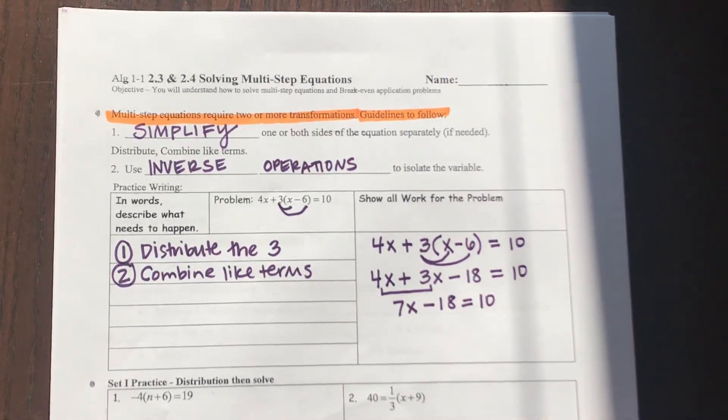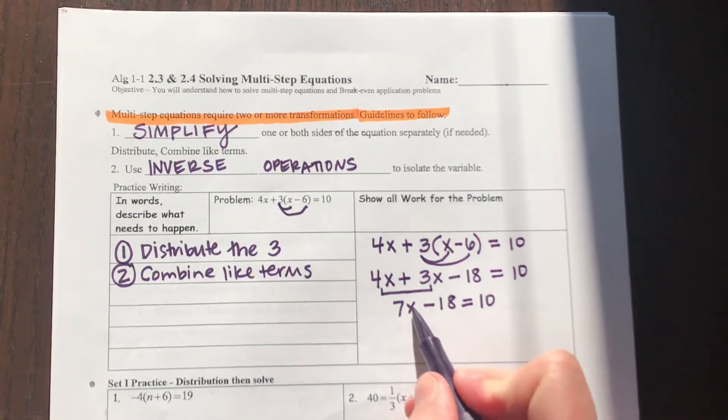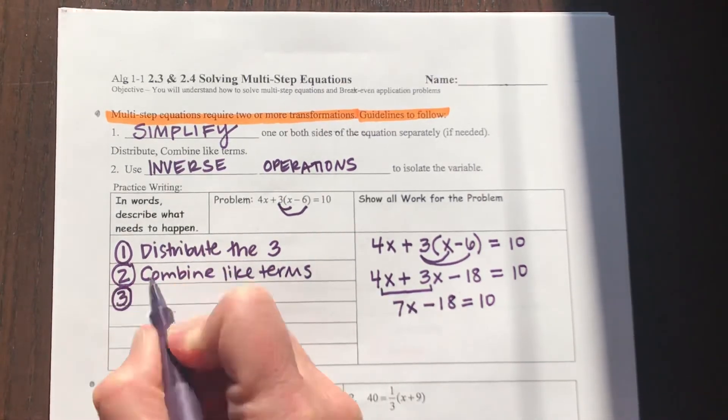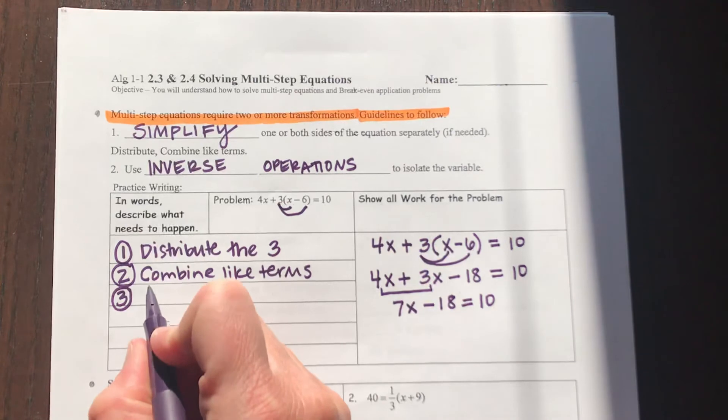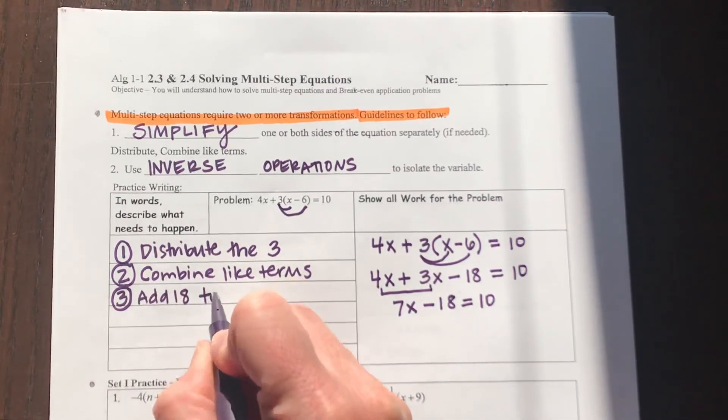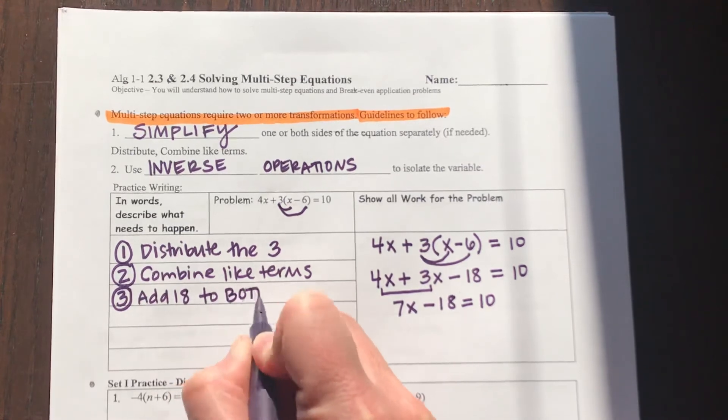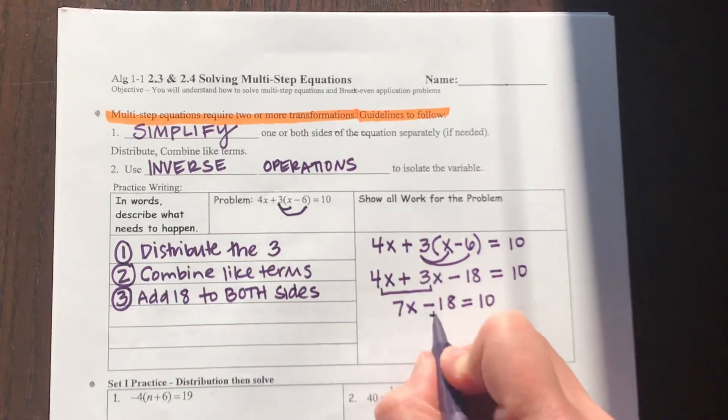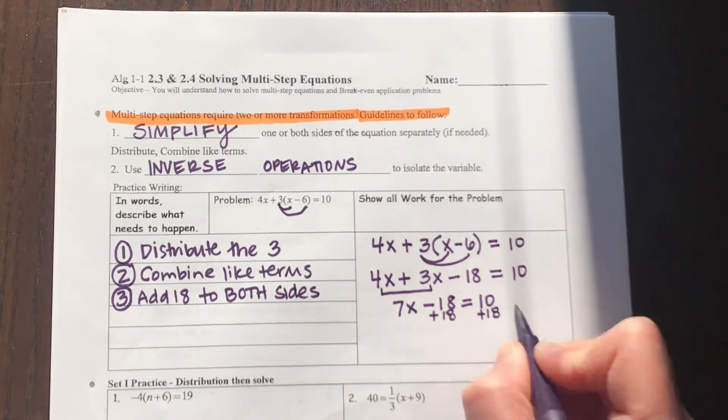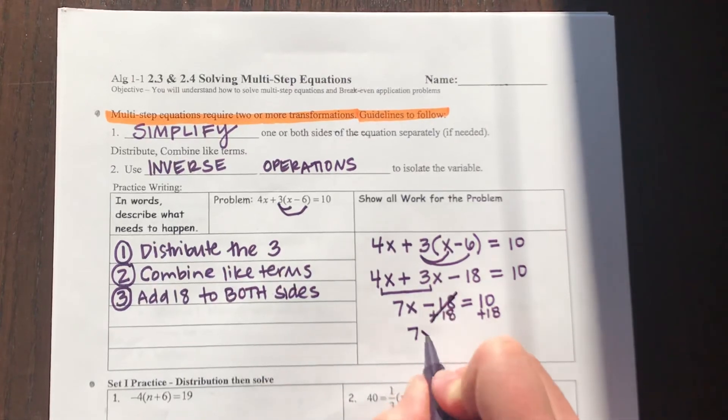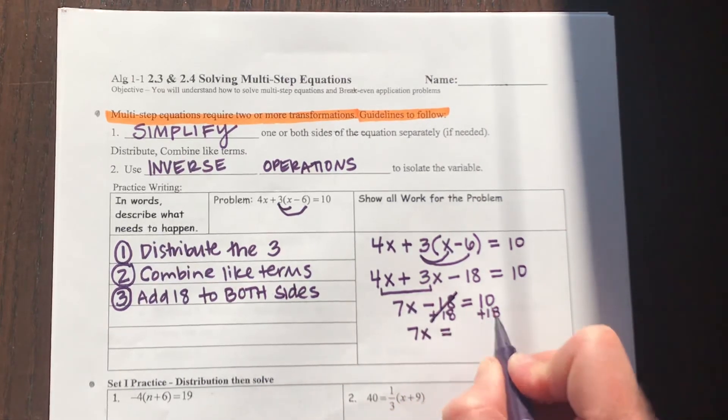Now my next step is going to be to isolate the x term. So in my next step, I'm going to add 18 to both sides. If I add 18 to both sides, my new equation will read 7x equals 28.